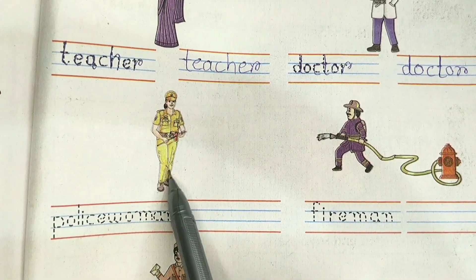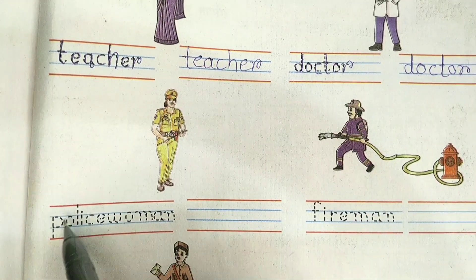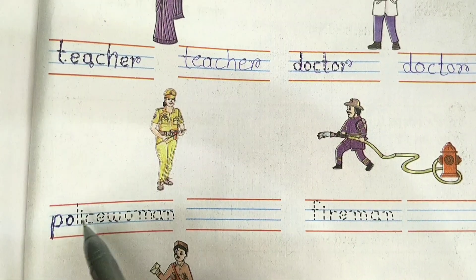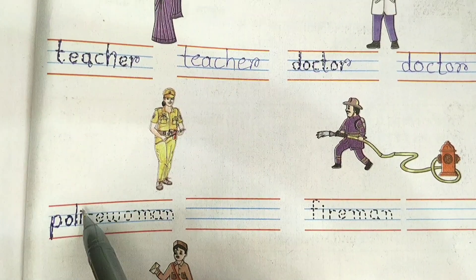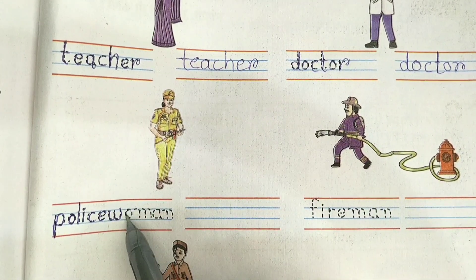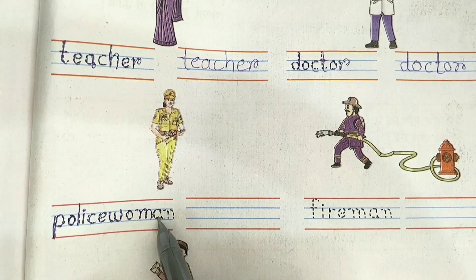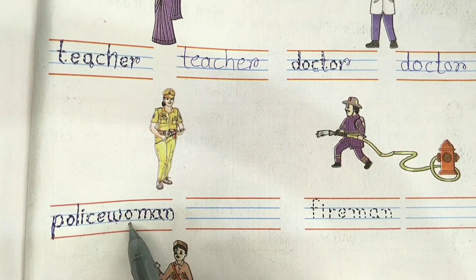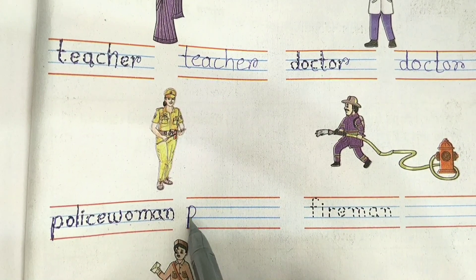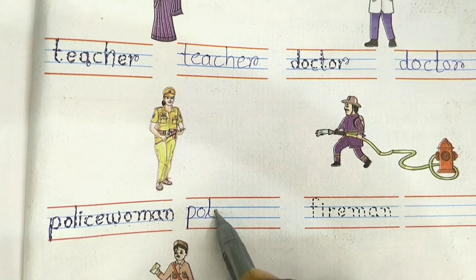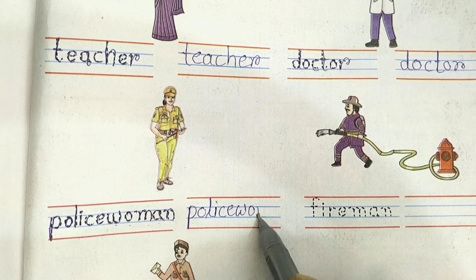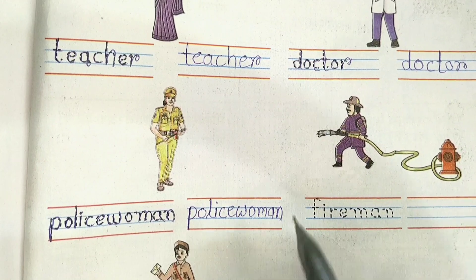She is a policewoman. So first of all, we will trace the name policewoman. P-O-L-I-C-E. She is policewoman. We will trace policewoman. W-O-M-A-N. Woman. Now we will write policewoman. P-O-L-I-C-E W-O-M-A-N. Policewoman.